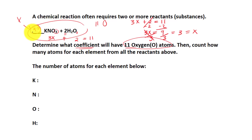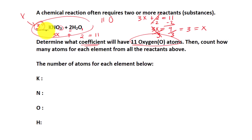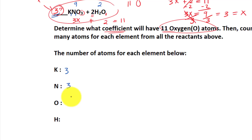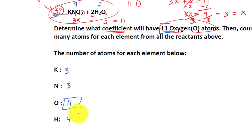So in this case, this coefficient is going to be 3. Now we're going to count the number of atoms for each element. For potassium, since this is 3, 3 times 1 gives us 3. For nitrogen, 3 times 1 gives us 3. For oxygen, 3 times 3 gives us 9, but we also find oxygen over here — 2 times 1 gives us 2 more oxygen. So 9 plus 2 gives us 11 oxygen, which is exactly what we're looking for. For hydrogen, 2 times 2 gives us 4 hydrogen. We can prove that this coefficient must be 3 to get a total of 11 oxygen atoms from both reactants.